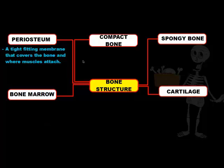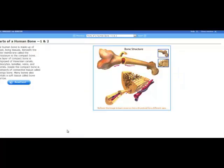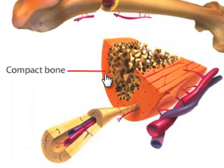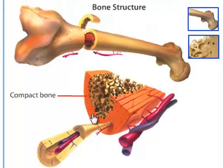The next structure of the bone we're going to talk about is compact bone. Compact bone is basically what it sounds like — it's the hard bone tissue that gives the bone strength and support. If we take a look at this picture of the bone again, the compact bone is the outer shell of the bone. It's the hard surface of the bone you feel when you have a bone in your hand. Now if we take a closer look at the compact bone, the structure will give us a reason as to why the bone is so solid.